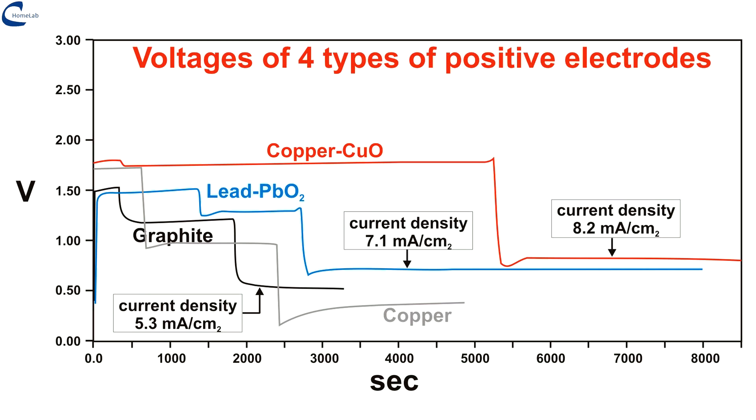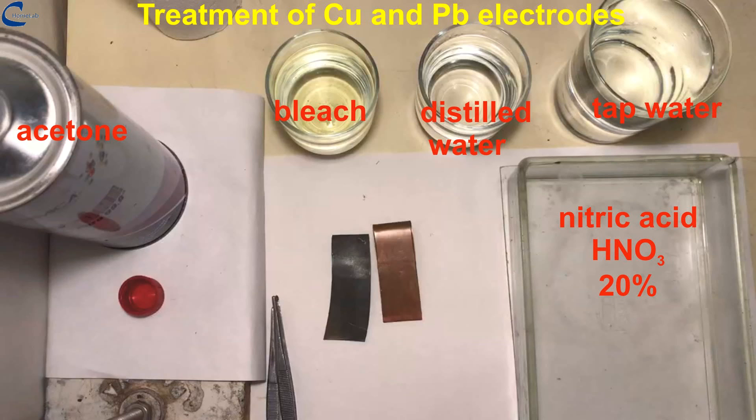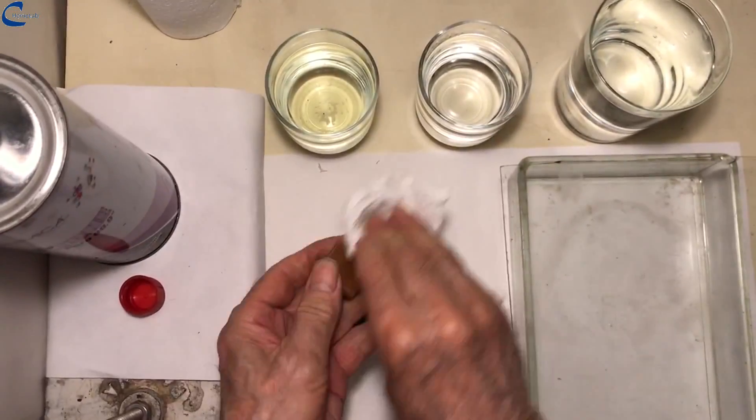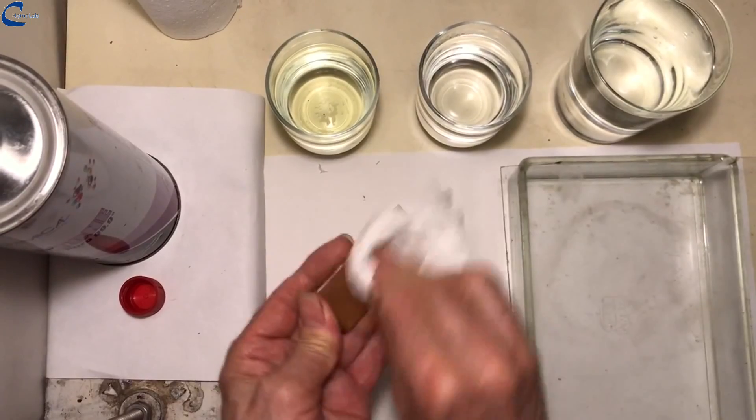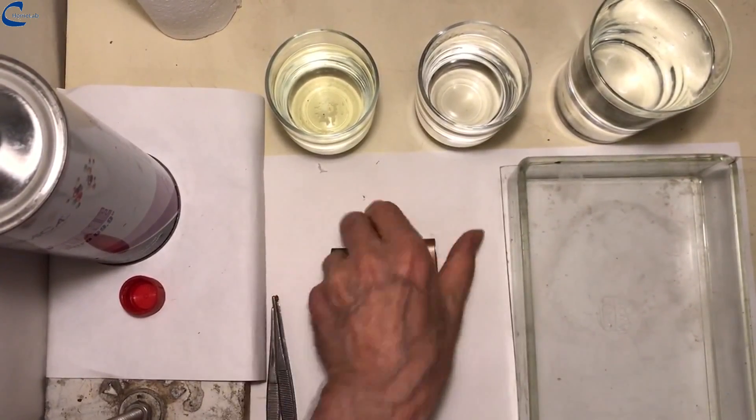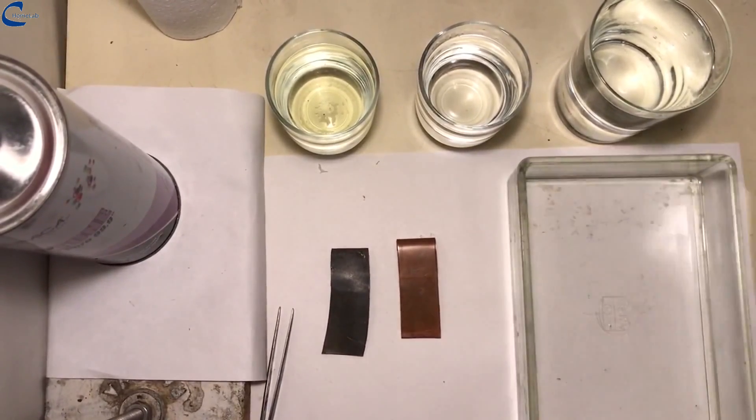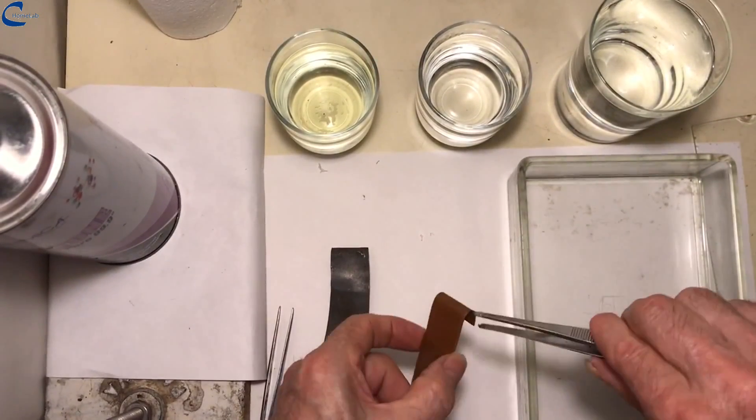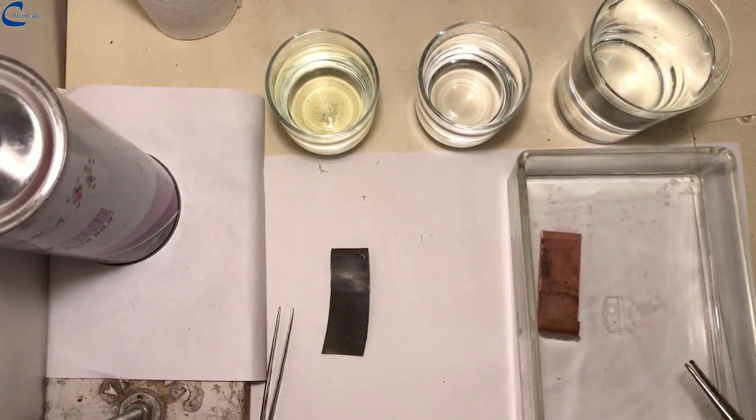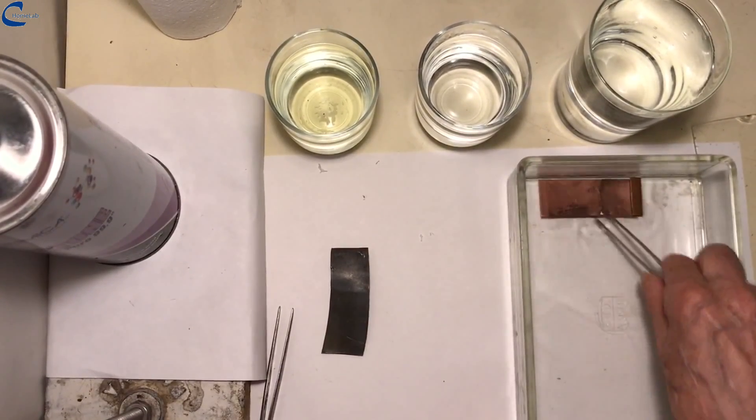In the picture the reagents necessary for the oxidation of lead and copper electrodes. The copper electrode is first degreased with acetone, and then immersed in the 20% nitric acid solution where it is completely cleaned of oxides.